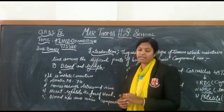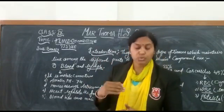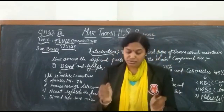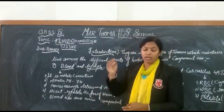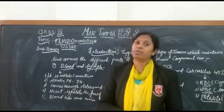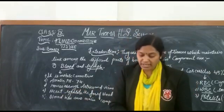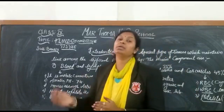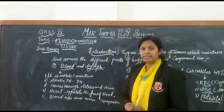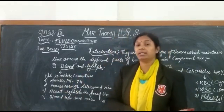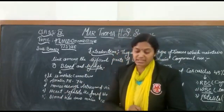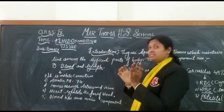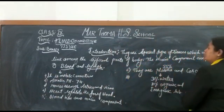Agranulocytes are divided into two types: lymphocytes and monocytes. Lymphocytes make up about 30 to 35% of WBCs and secrete antibodies which help in fighting disease in our body. Monocytes make up 3 to 7% of WBCs and help in engulfing foreign particles in our body.